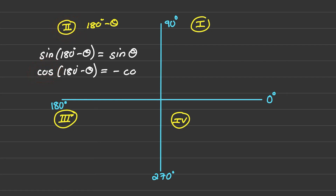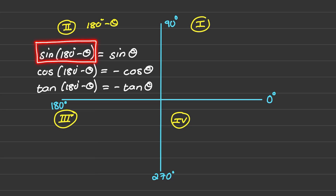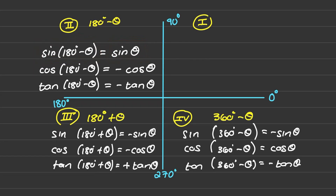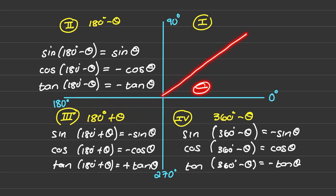For tan(180 minus theta), I know that tan is negative in quadrant two, so it reduces to negative tan of theta. So I'm using the reduction formula to rewrite a trigonometric ratio in terms of an acute angle. In the third quadrant we use 180 plus theta to reduce the angle to an acute angle between zero and 90 degrees.